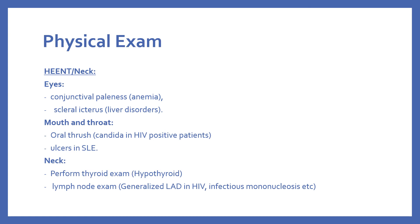When examining the patient's eyes, check for conjunctival paleness, which is a sign of anemia. If there is scleral icterus, start thinking of liver disorders and other causes of jaundice like hemolytic anemias. If there is oral thrush, the patient may be immunocompromised and you should be considering HIV as a possible diagnosis. Mouth ulcers are common in lupus, and lupus can cause anemia of chronic disease.